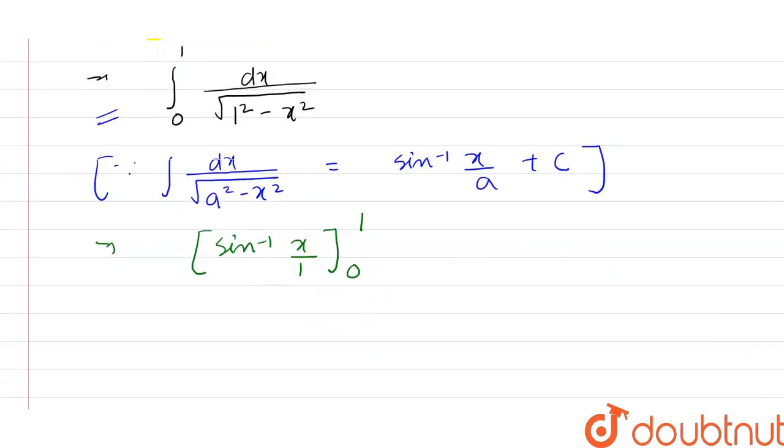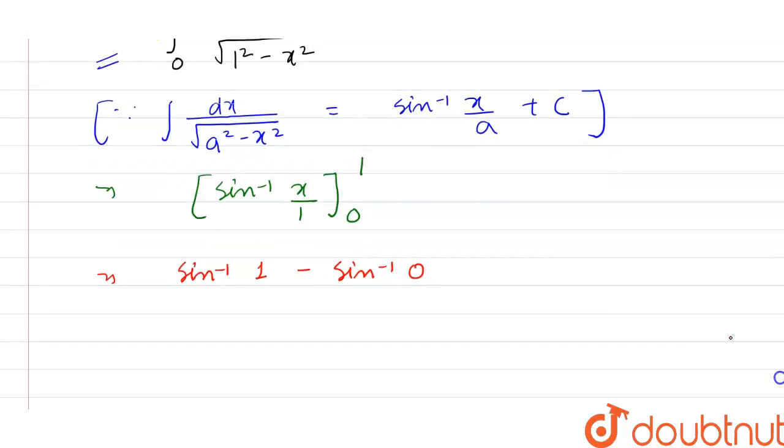Now if we apply limits, we will get sin inverse 1 minus sin inverse 0. We know that sin inverse 1 is equal to pi by 2 and sin inverse 0 is 0. So this is equal to pi by 2.